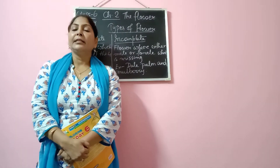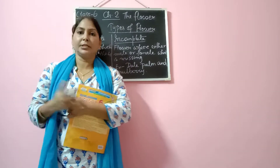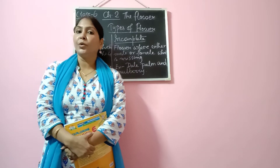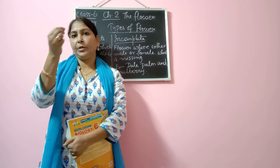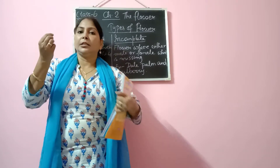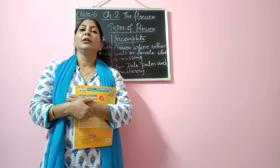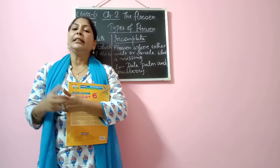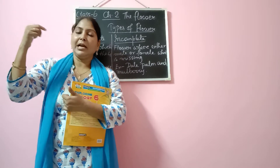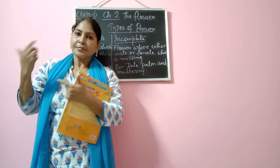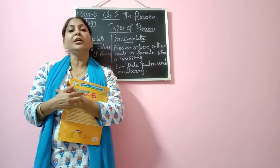We learnt that the flower is made up of whorls and it has got 4 whorls. The outermost whorl is called calyx, where you get to see the sepals, the pedicel and thalamus — these are part of the first, outermost whorl. Then the second whorl, we come to the petals. All the petals together make the next whorl or the next layer of the flower.